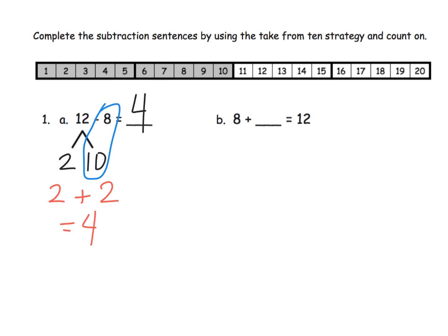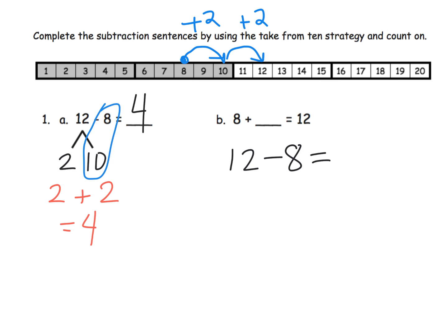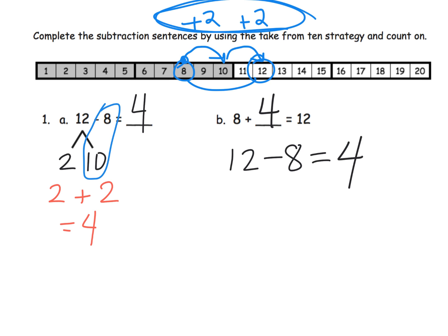Over here you see an addition question, and it says complete the subtraction sentences. They're showing us that another way to think of 12 minus 8 is to think of 8 plus what equals 12. That's essentially what we're doing with the count on method. We start with 8, go up 2 to get to 10, and then go up 2 more to get to 12. So to start at 8 and get to 12 means we need to go up by 4. So 12 minus 8 is 4, meaning 8 plus 4 is 12.